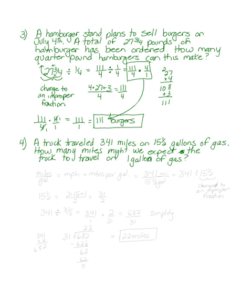Our last problem. A truck traveled 341 miles on fifteen and a half gallons of gas. How many miles might we expect the truck to travel on just one gallon of gas? So we're going to be calculating our miles per gallon. Often it's given as MPG, where this means miles per gallon. So we take our miles, 341, and we're going to be dividing this by our fifteen and one half gallons.